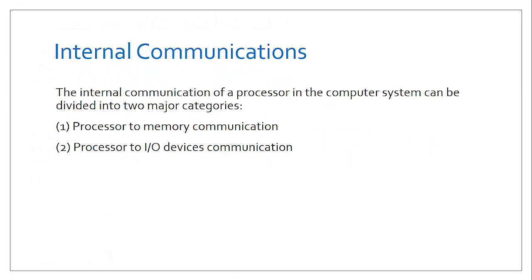Before we understand how these operations happen, it's important to understand how the various units communicate. For the CPU to achieve its functionality and performance, we have what we refer to as internal components communication. This is divided into two major categories: communication from the processor to the memory, and communication from the processor to the various input and output devices.